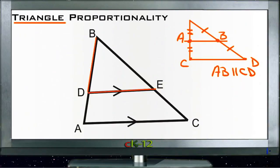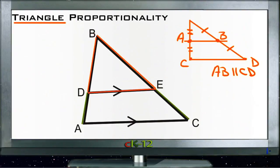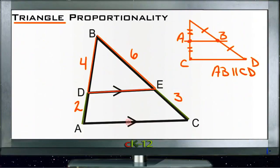and from here to here, will be the same as comparing here to here and here to here. Let's put some numbers in there for reference — let's say this is 4 and this is 2.